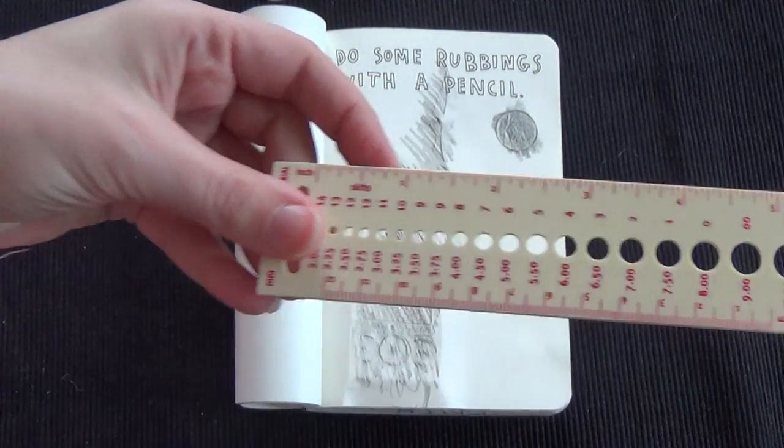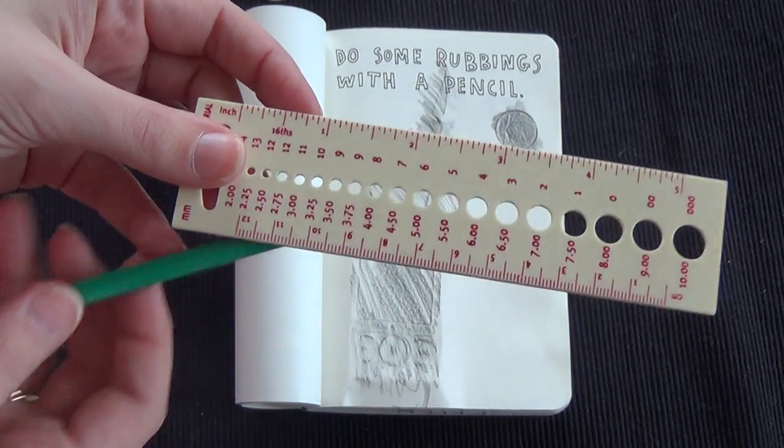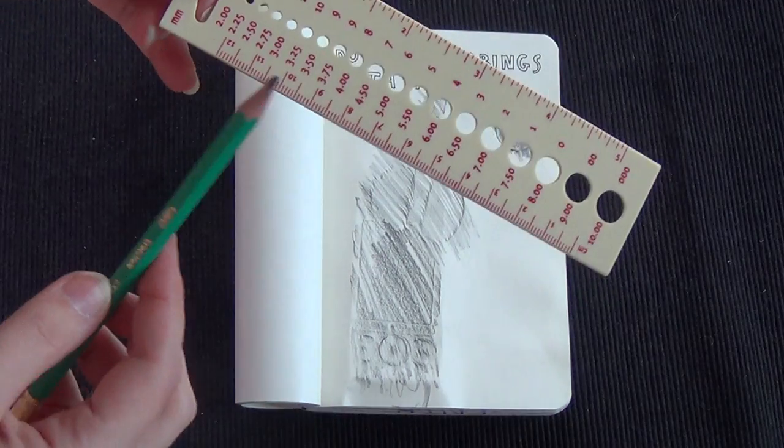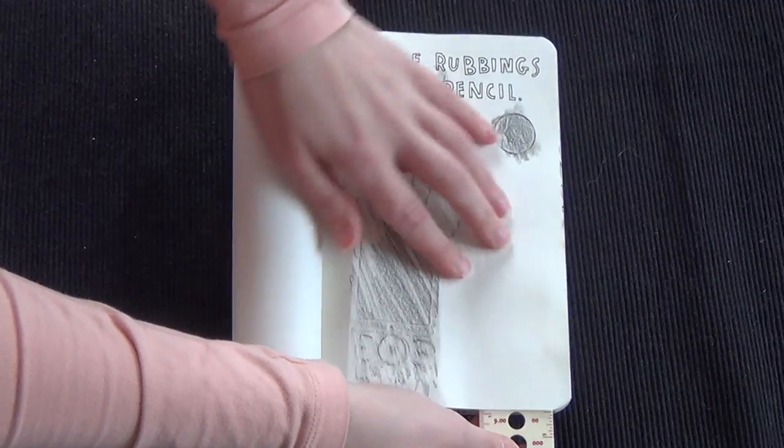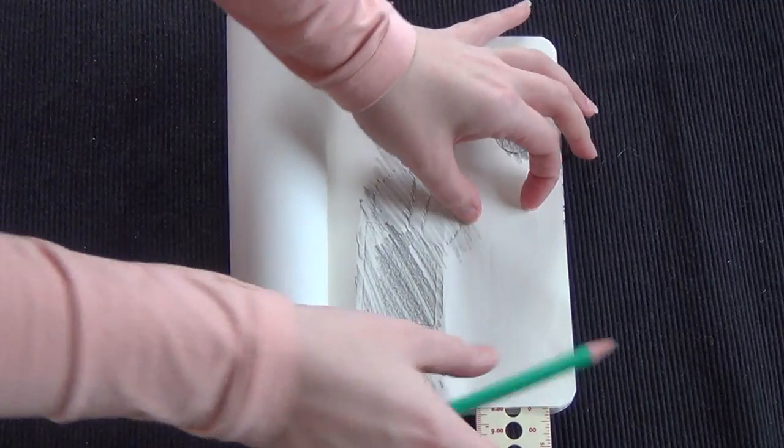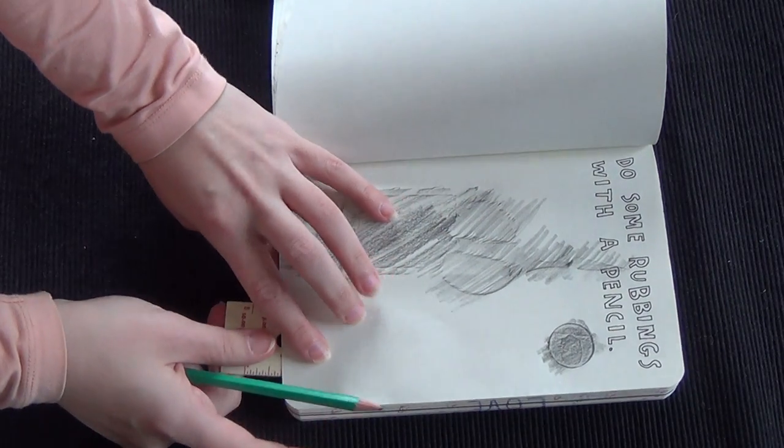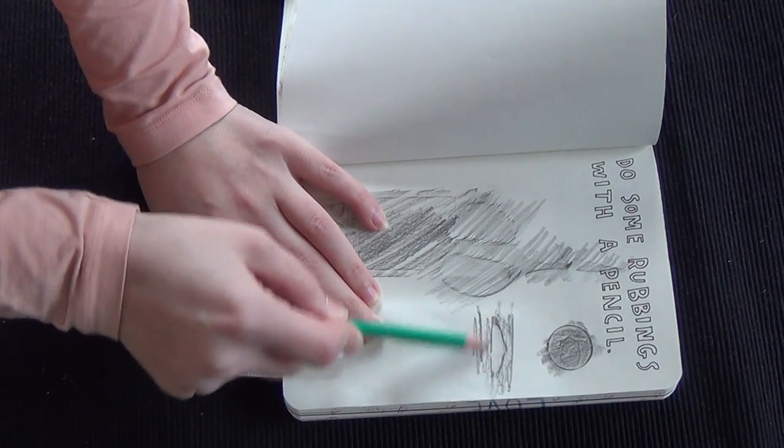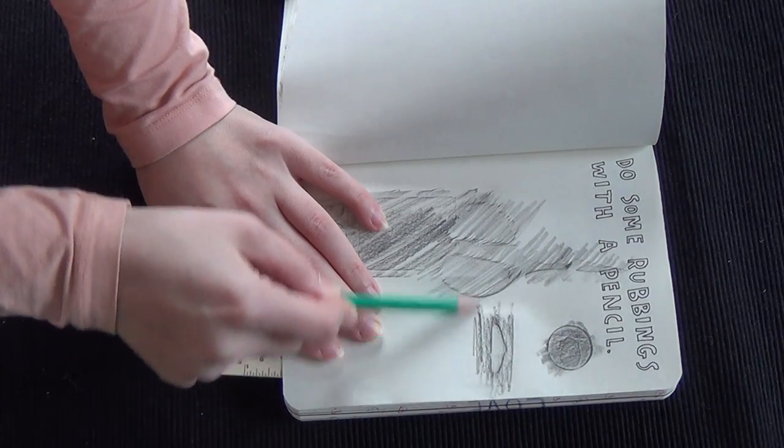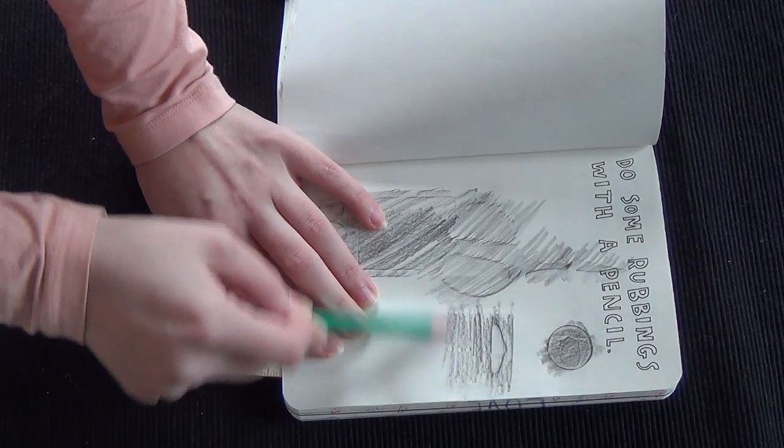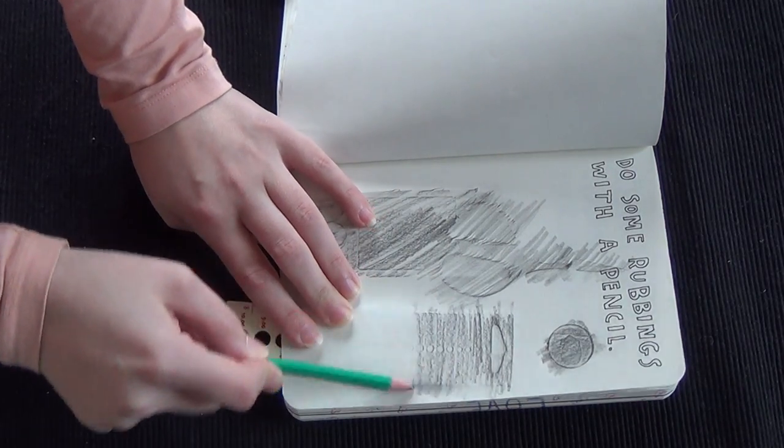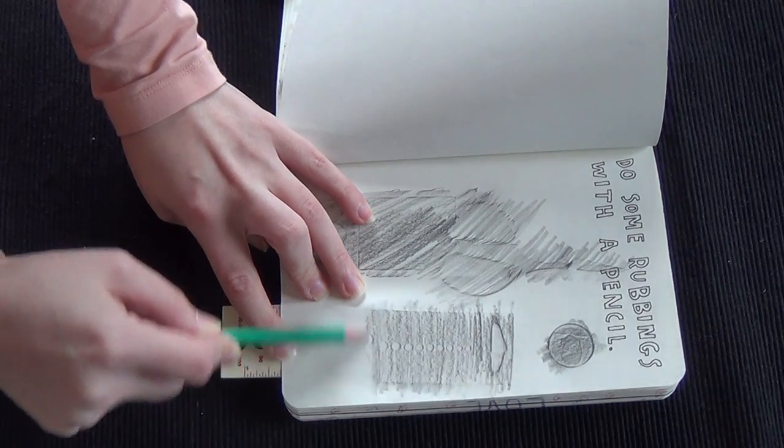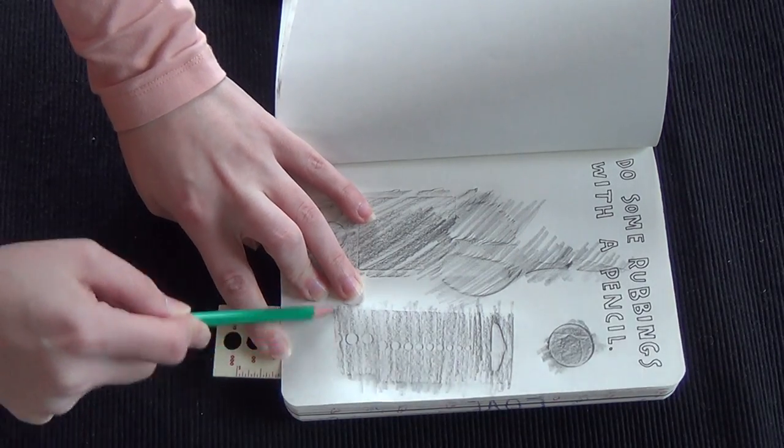And the last one I have is my measuring, my gauge measure, is that the right word? For my knitting needles. And it's also a ruler. And I'm just going to use like the top part of it right here. And I'm going to have to do this this way. I'm sorry you guys. And it moved. Oh no. Oh wow.